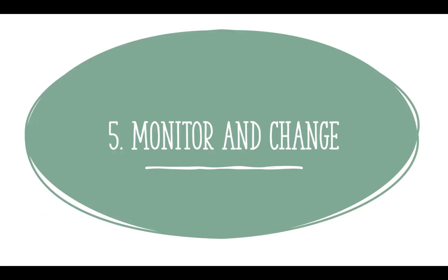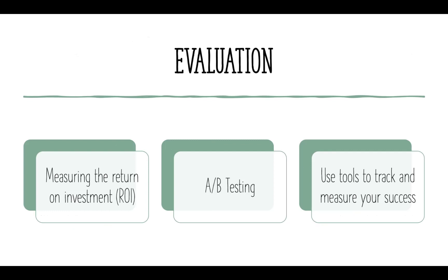Finally, step five: monitor and change. This goes back to the research element — what is working and what do you need to change or adapt? When evaluating and measuring your ROI — return on investment — you want to make sure you're seeing an increase, not a decrease. You can also do A/B testing, meaning you send out one ad to one area and another ad to a different area to see how they compete. And of course you can use tools to track and measure success and use data to decide what's working and what isn't.